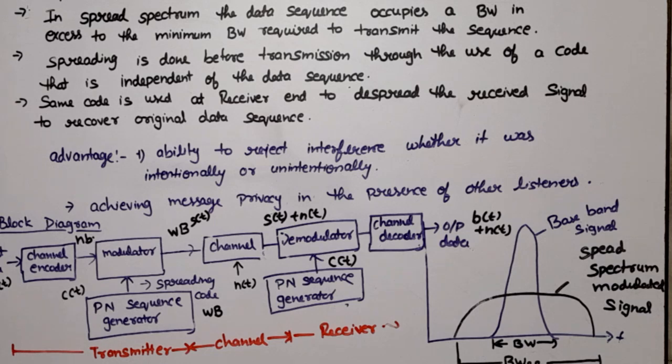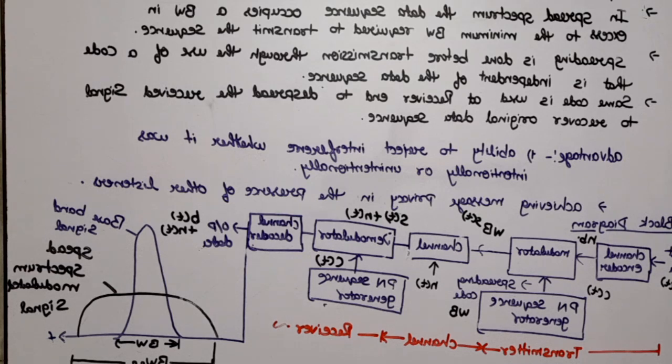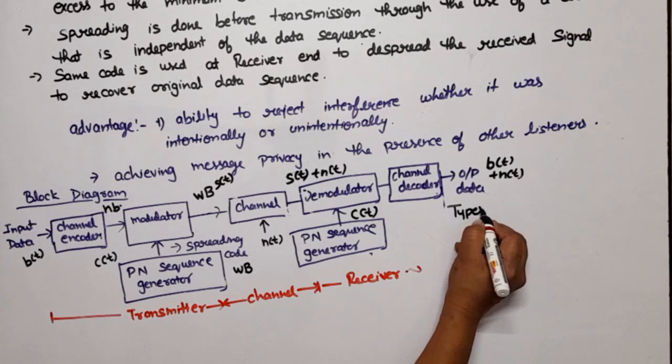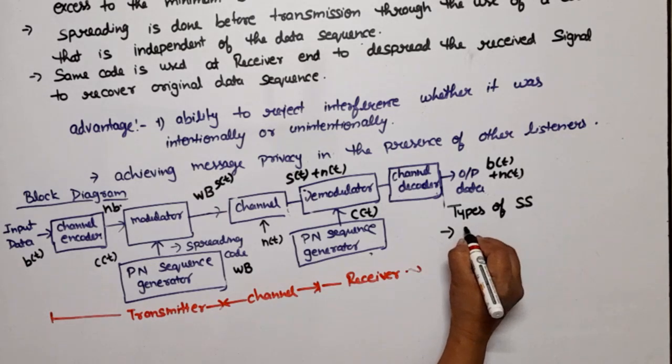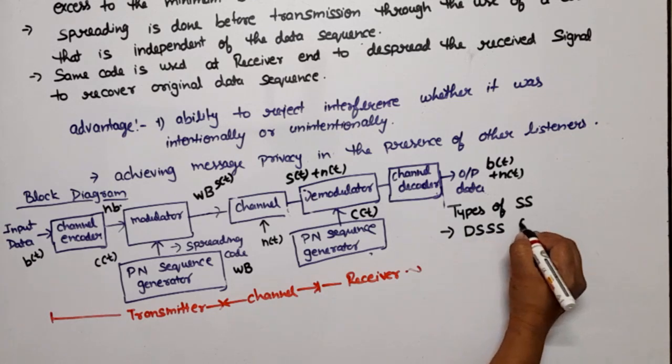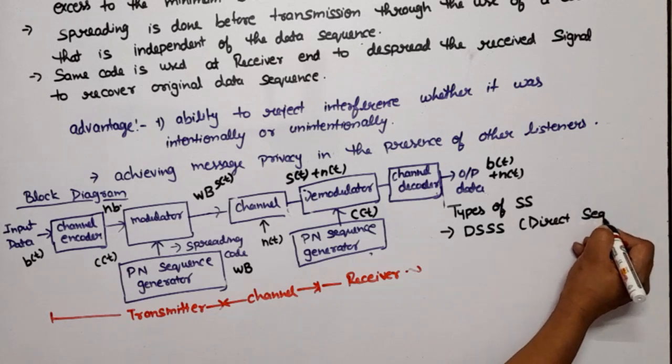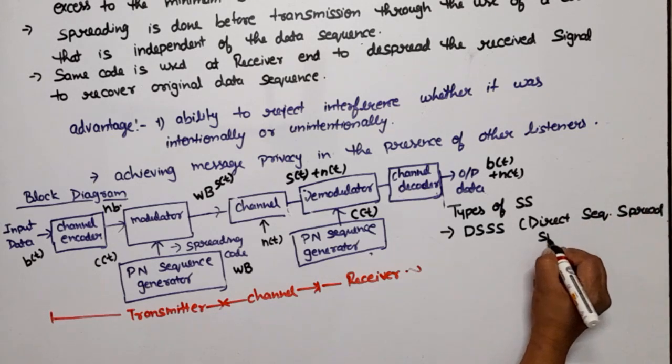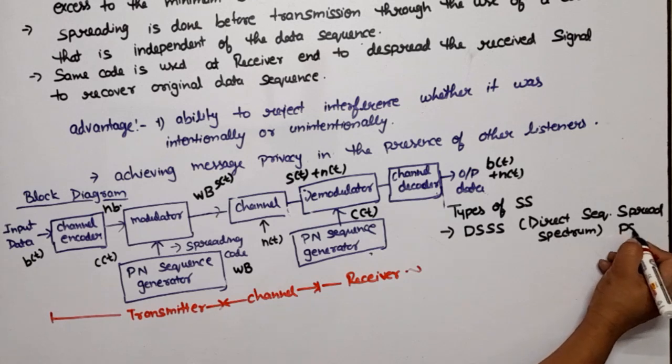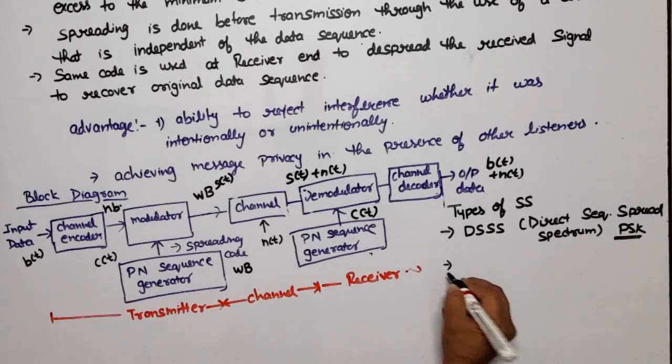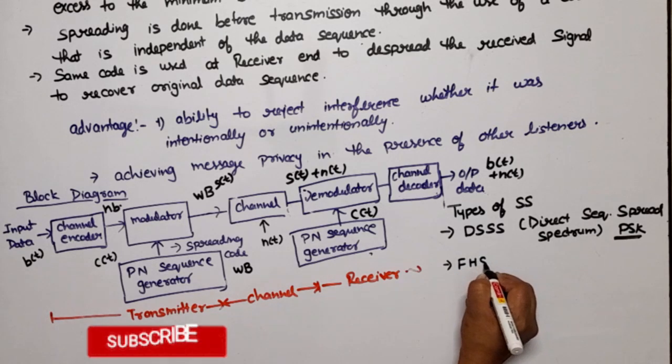This technique was specially developed for military application during second world war for privacy purpose, means to avoid interference like intentional interference like jamming. Now there are types of spread spectrum. It depends on the technique of modulation. If we are using PSK modulation then technique will be DSSS means direct sequence spread spectrum. We will discuss this in detail in coming videos.